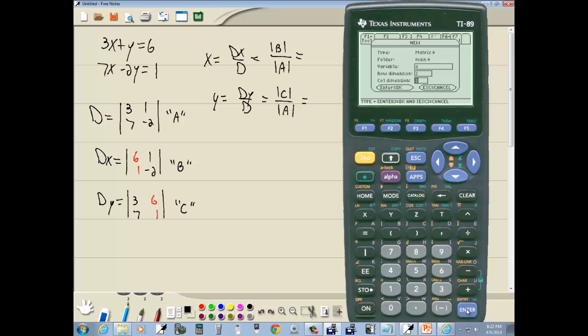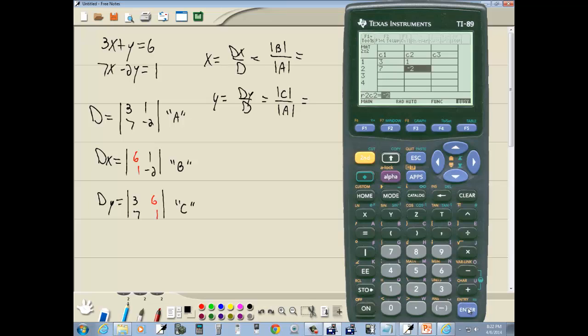Okay let's save, now I'll do an enter to save that and I guess I didn't have A. So now I'll type my numbers so I do 3 enter, 1 enter, 7 enter, negative 2 enter. So I got 3, 1, 7, negative 2.